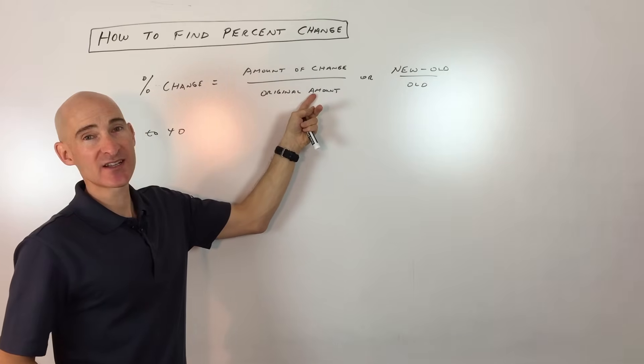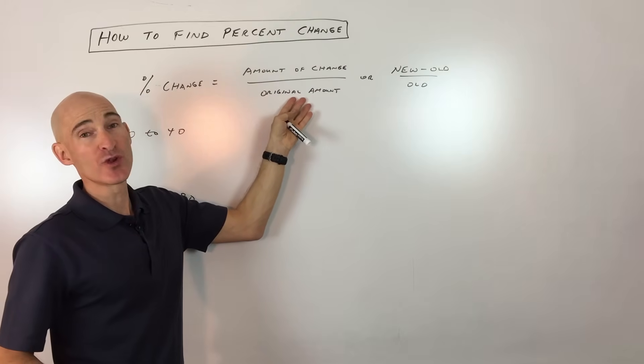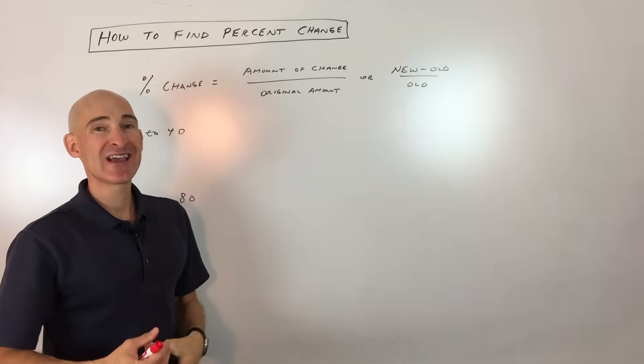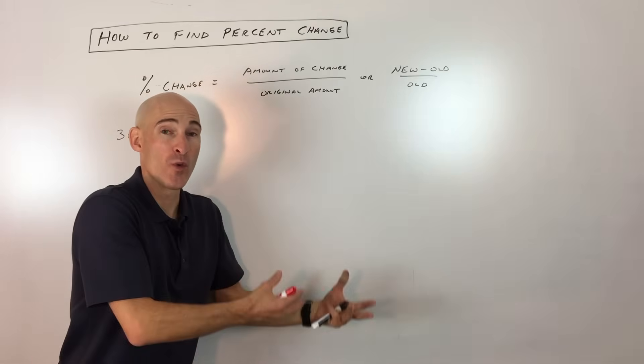And this is the key: a lot of students will accidentally divide by the new amount. You want to divide by the original amount, because you want to see how it's changing compared to where it was before.